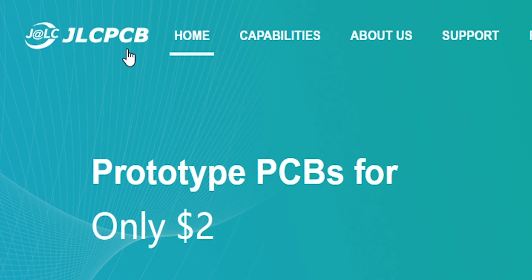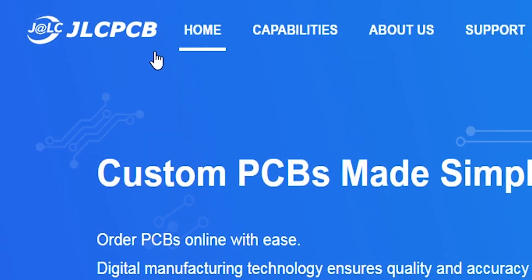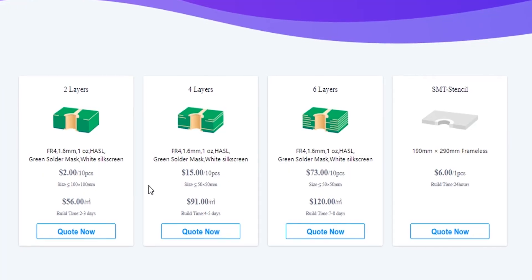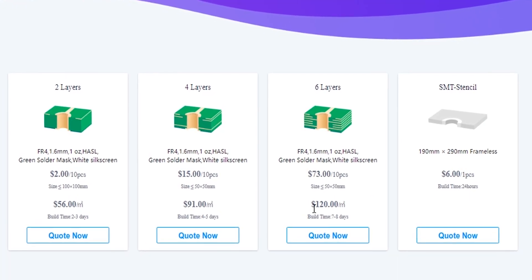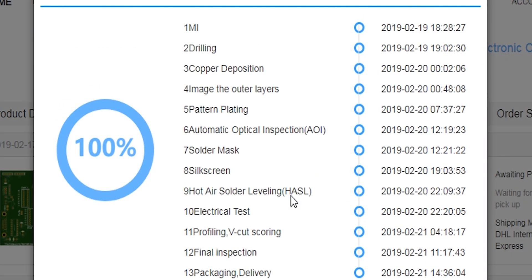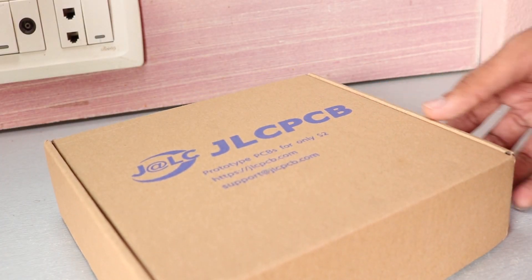This video is sponsored by JLCPCB. They are known for high quality PCB prototype manufacturing. You can order two to six layer PCB from their website. To see production in progress you just have to click one button, and build time is only 24 hours for two layer PCB. Check them out, link is in the video description.